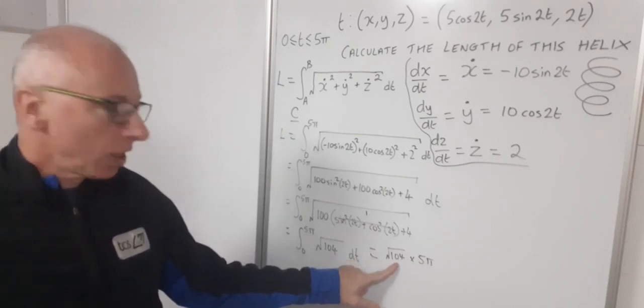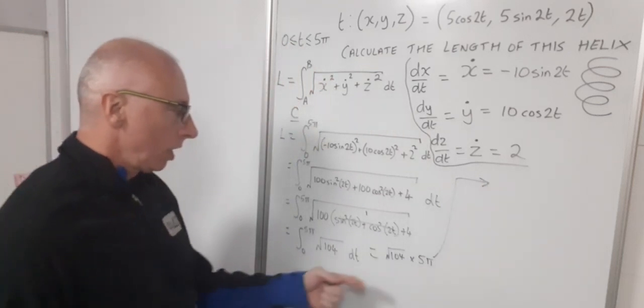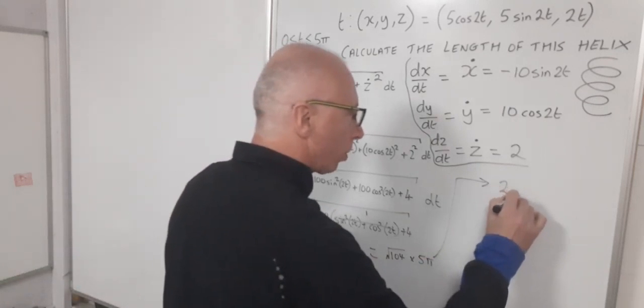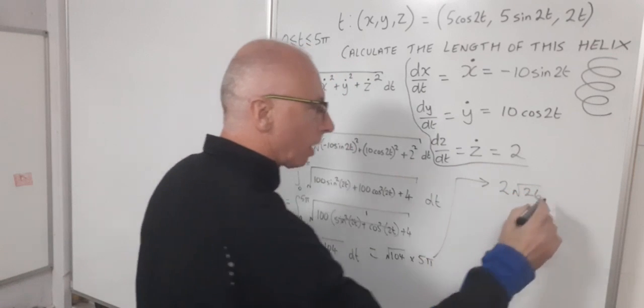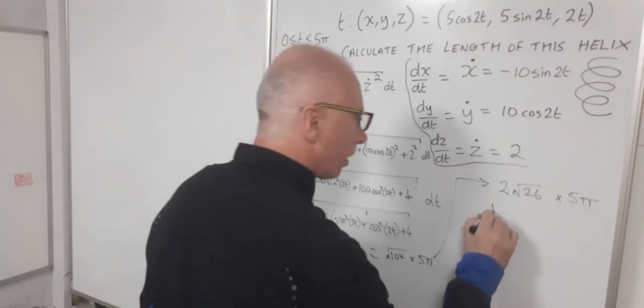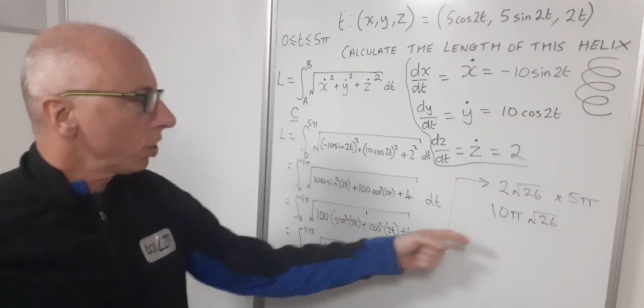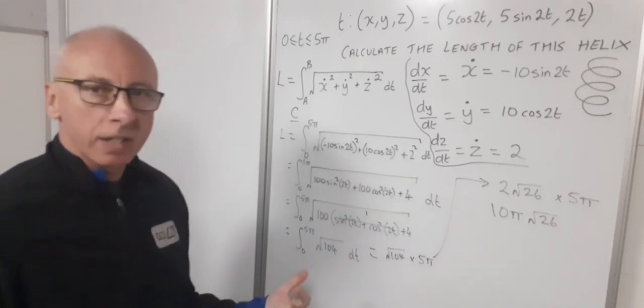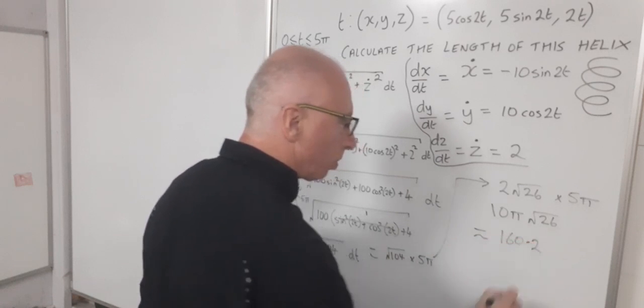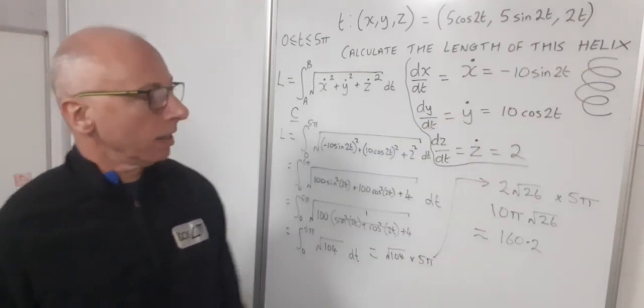Now we could just do a little bit of simplification here. Square root of 104 using thirds is square root of 26 times 2. So 2√26, and then that times by 5π. So now we're up to 10π times the root 26, which is just over 5. So we're just over 50π here. So plug that into our calculator, we'll get something that's approximately 160.2 for one decimal place. So that's the arc length of this helix. And we'll see you next time.